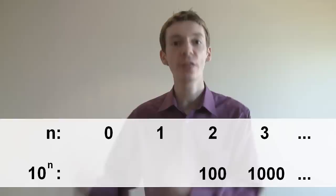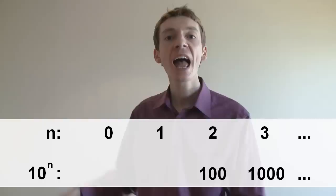Now as powers go up, you multiply by 10. So you get 100, 1000, 10,000, 100,000, and so on. As powers go down, you do the opposite. You divide by 10. So you've got 1000, 100, 10, and 1. So 10 to the power 0 is 1.